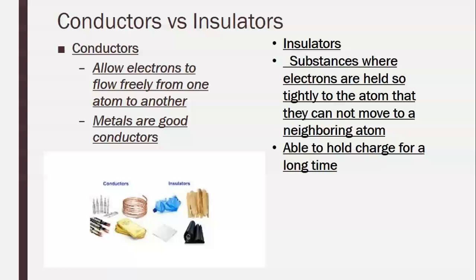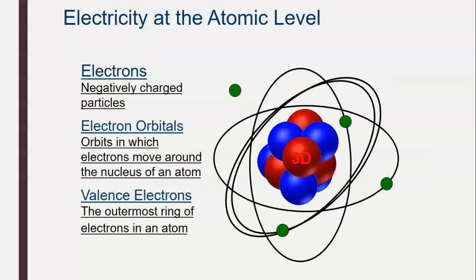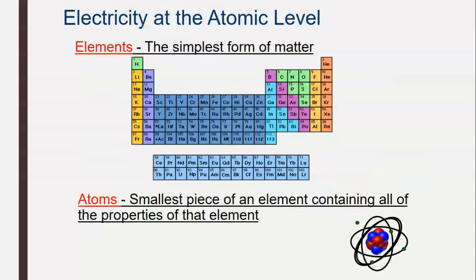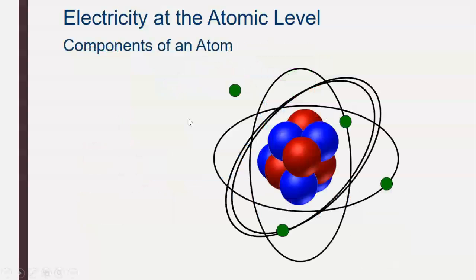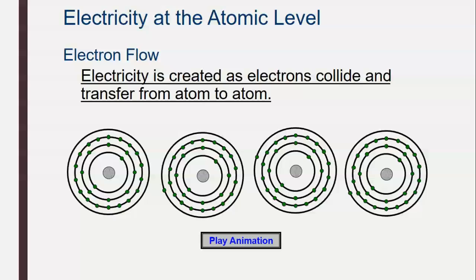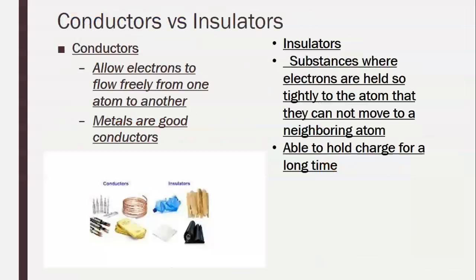And so you might remember our periodic table of elements. Mostly the elements in this section are great conductors of electricity. They're normally metals and metalloids, and they allow those electrons to flow through. So that's what this says right here: metals are good conductors of electricity.